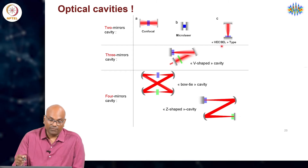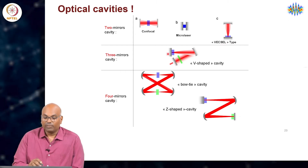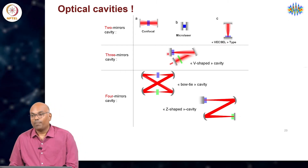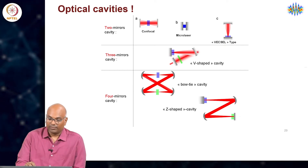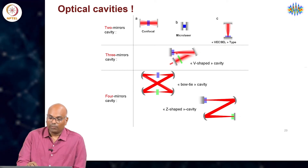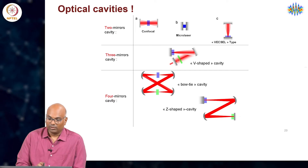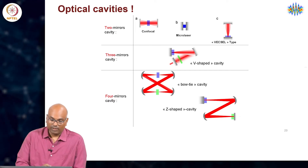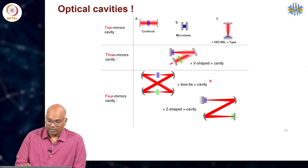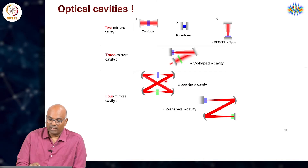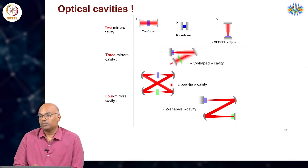You can have a three-mirror cavity as well. You can want to focus the beam somewhere inside for some application. You can have four-mirror cavities which have a bow-tie geometry.